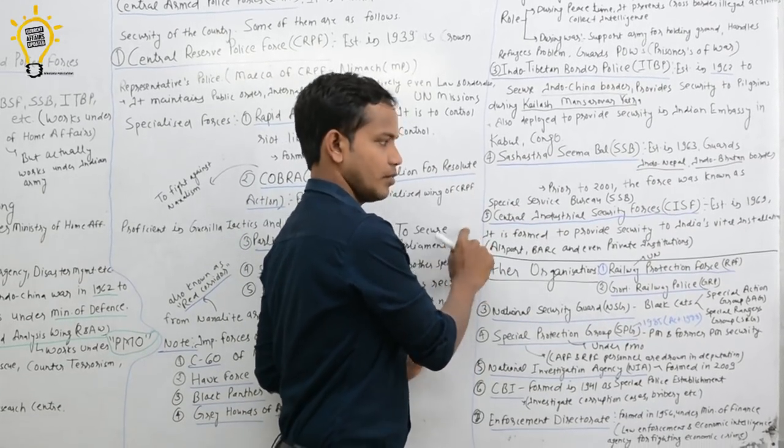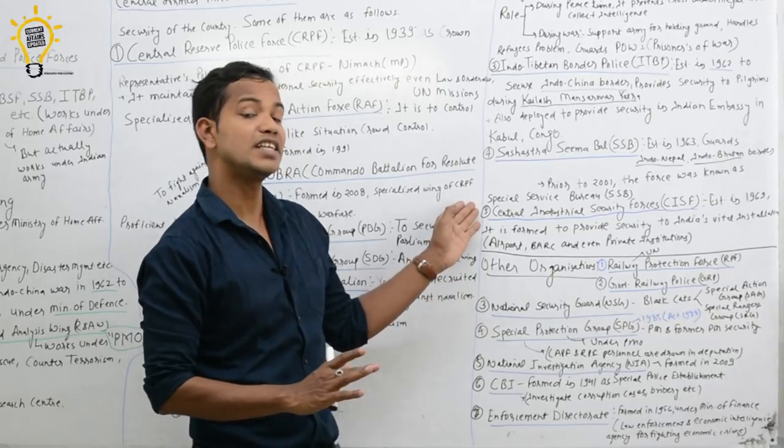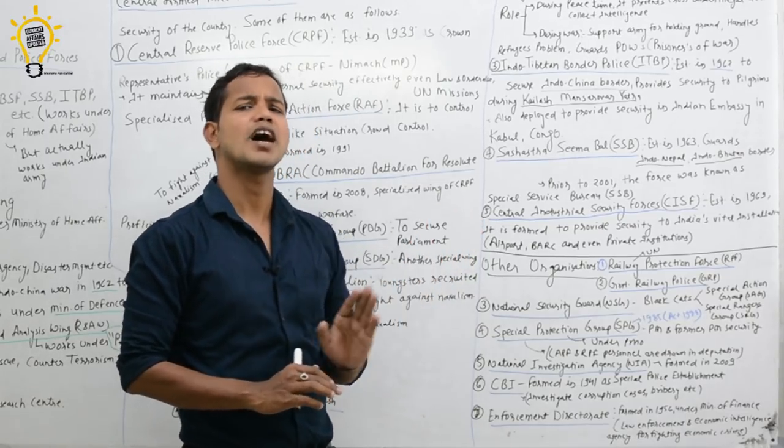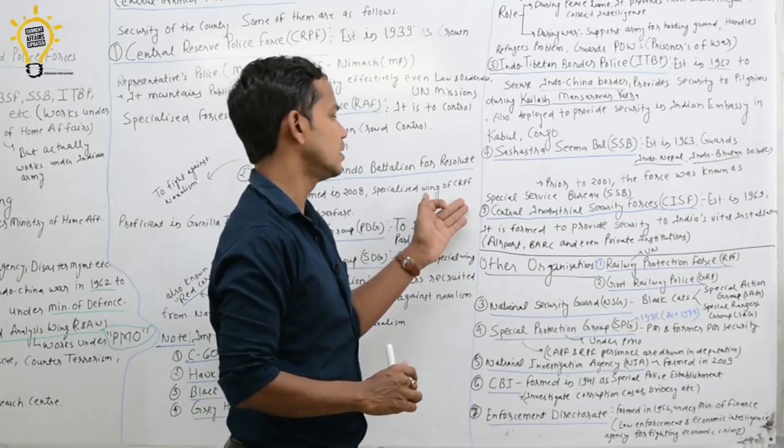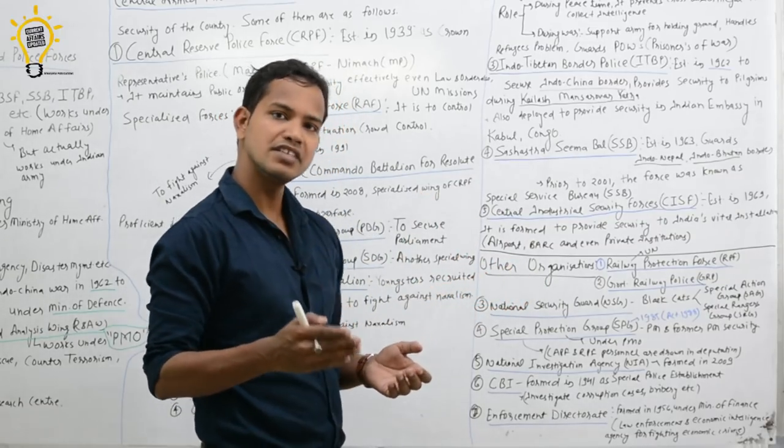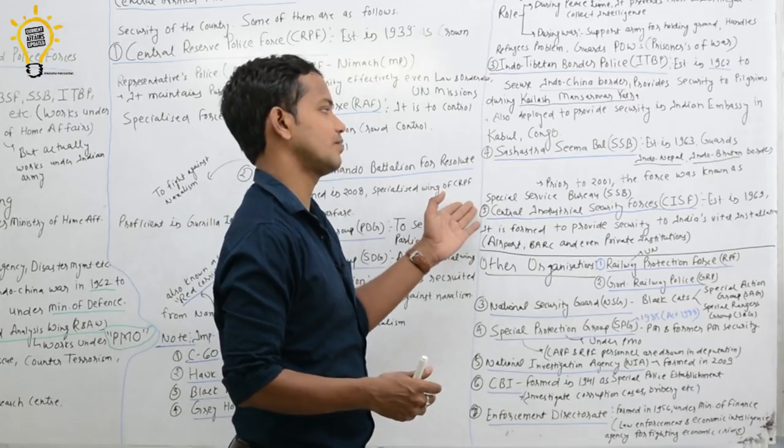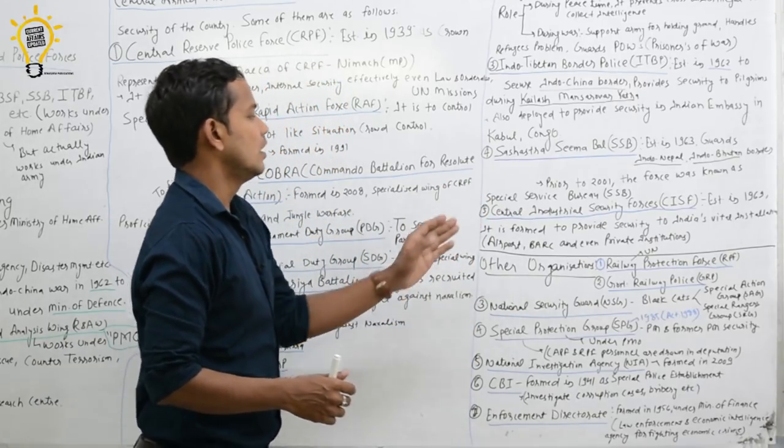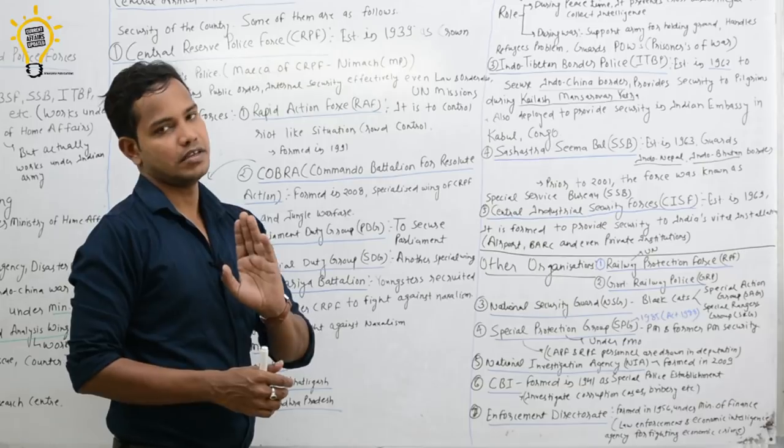Next one is CISF. As you know, CISF was created in 1969. Its main work is to protect security installations, whether it is airports, ports, Delhi Metro, even some private institutions are also protected by CISF. They also go for United Nations peacekeeping missions.